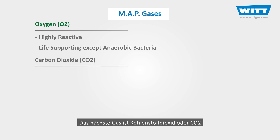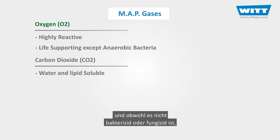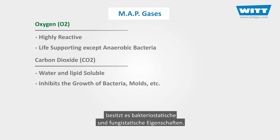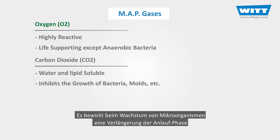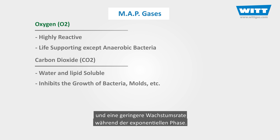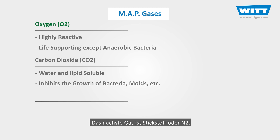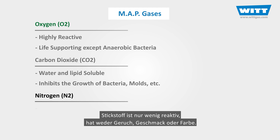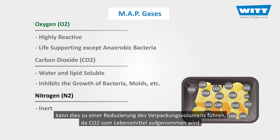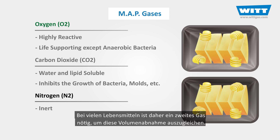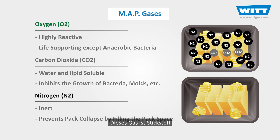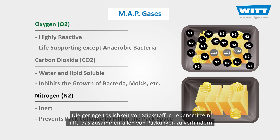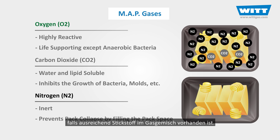The next one is carbon dioxide, or CO2. Carbon dioxide is both water and lipid soluble, and although it is not a bactericide or fungicide, it has bacteriostatic and fungistatic properties. The overall effect on microorganisms is an extension of the lag phase of growth and a decrease in the growth rate during the logarithmic growth phase. The last is nitrogen, or N2. Nitrogen is a relatively unreactive gas with no odour, taste, or colour. Using carbon dioxide alone can lead to a volume decrease due to CO2 going into solution, so for many food products, CO2 requires a second gas to balance this volume decrease — and this gas is nitrogen. The low solubility of nitrogen in foods can be used to prevent pack collapse by including enough of it in the gas mixture.